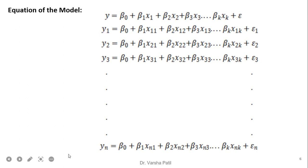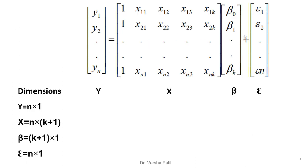Since we have n records, we write the equation n times. The first equation is y₁ = β₀ + β₁x₁₁ + β₂x₁₂ + β₃x₁₃ + ... + βₖx₁ₖ + ε₁. For the second record it is x₂₁ to x₂ₖ, and so on for all n records. We can represent this in matrix form as Y = Xβ + ε, where Y is n×1, X is n×(k+1), β is (k+1)×1, and ε is n×1.